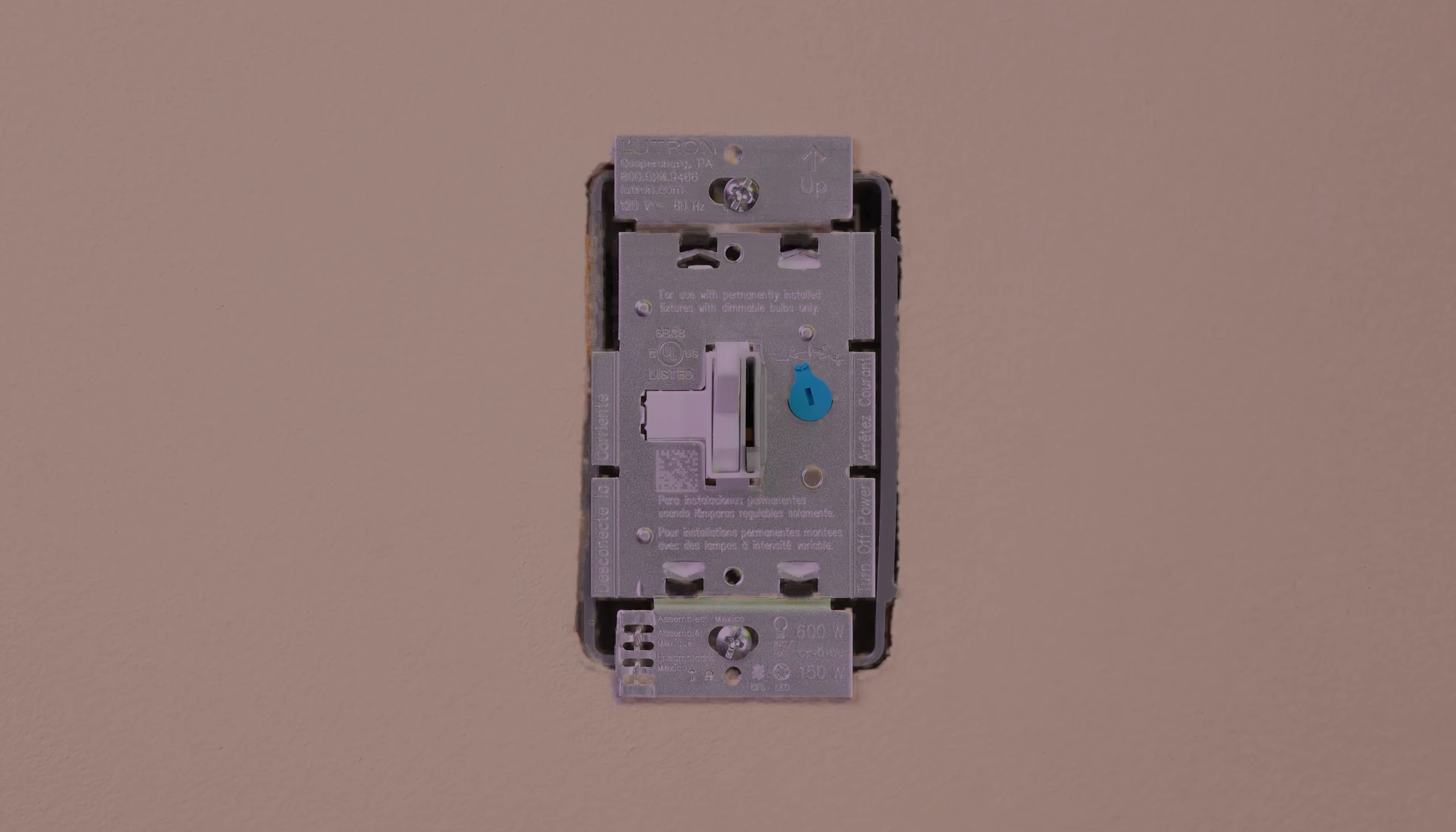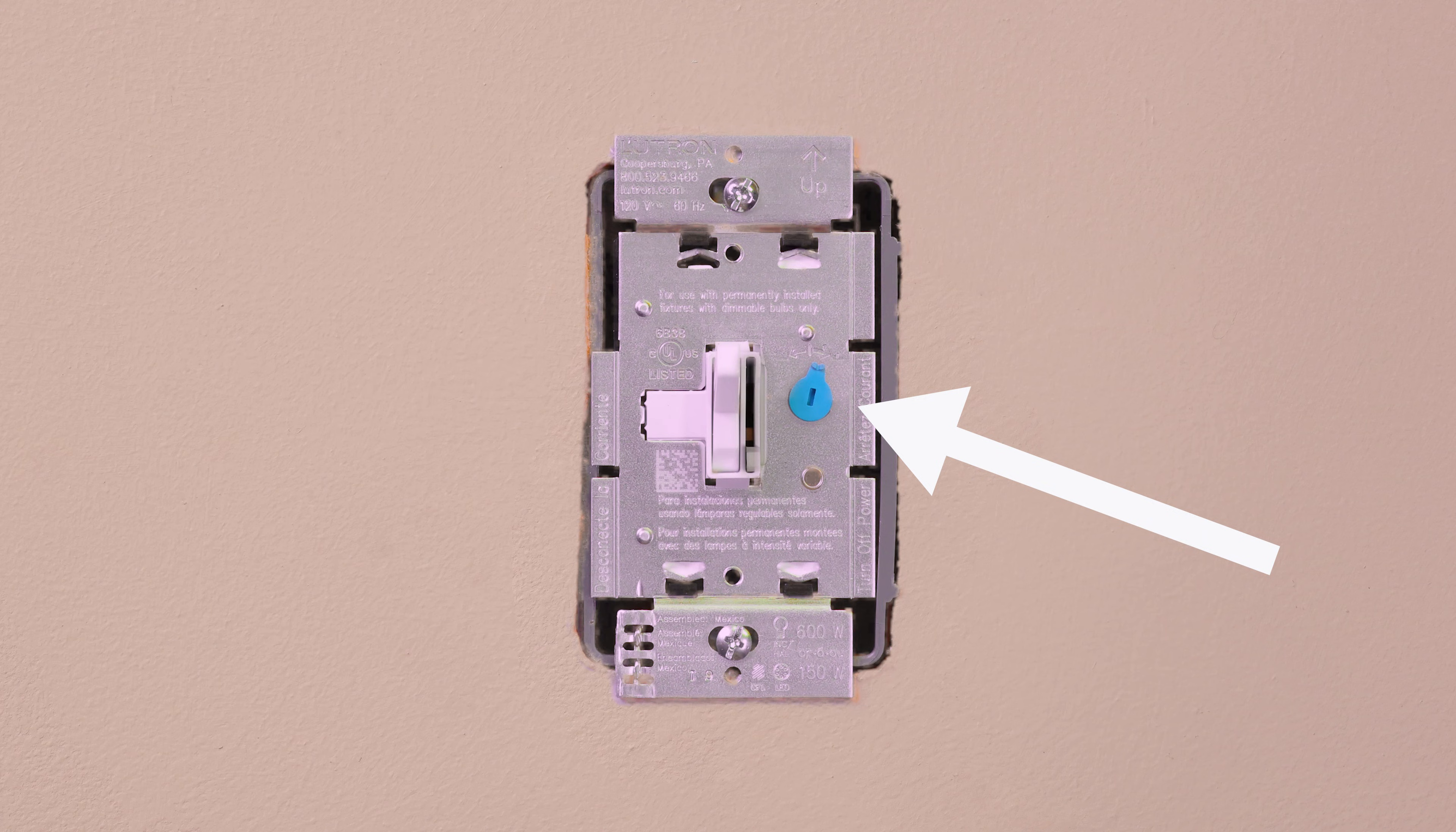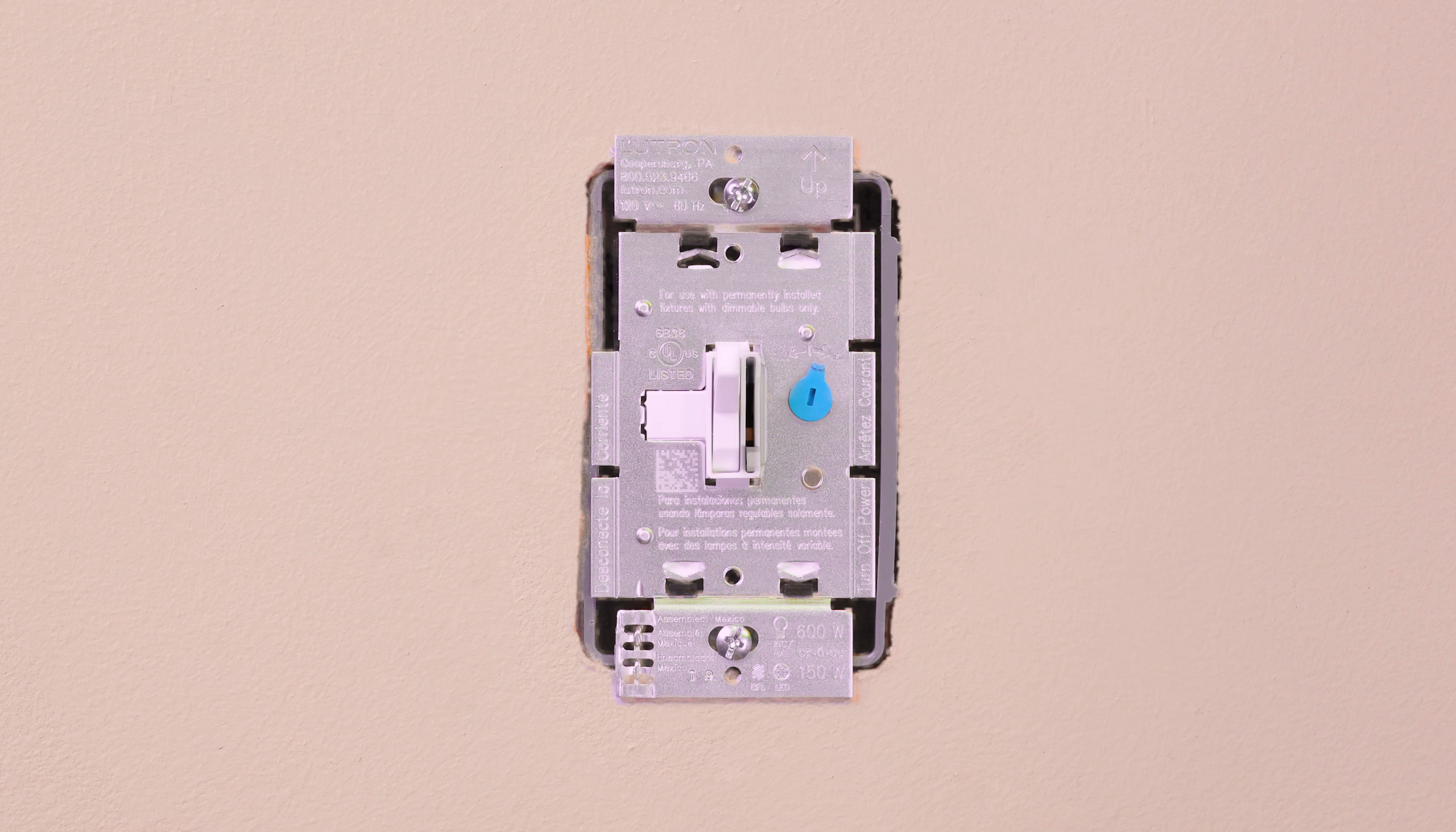If the lights are flickering, adjust the blue lever until they stop. Turn the lights off and then on again. If all the bulbs don't turn on or aren't stable, repeat the previous step and readjust the dial.